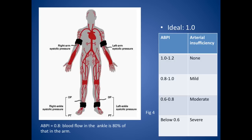Looking at the scores: the ideal ABPI is 1, where you've got equal pressures in the arms and legs. A score of 1 to 1.2 would indicate no arterial insufficiency. A score of 0.8 to 1 would indicate mild arterial insufficiency. 0.6 to 0.8 would be moderate insufficiency. And below 0.6, that is severe arterial insufficiency.